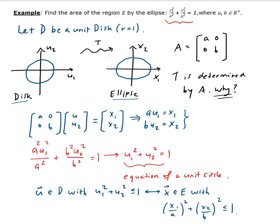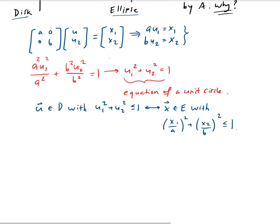So now we have everything. The area of the ellipse is going to be equal to the determinant of A times the area of that disk.